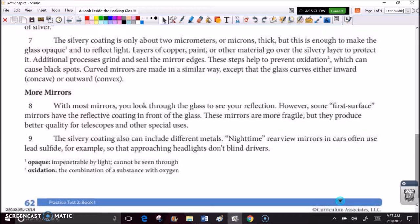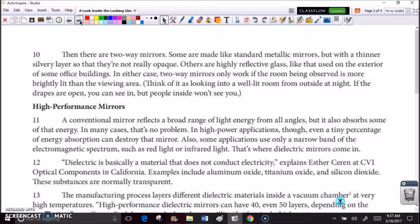More mirrors. With most mirrors, you look through the glass to see your reflection. However, some first surface mirrors have the reflective coating in front of the glass. These mirrors are more fragile, but they produce better quality for telescopes and other special uses. The silvery coating also can include different metals. Night-time rearview mirrors in cars often use lead sulfide, for example, so that approaching headlights don't blind drivers.